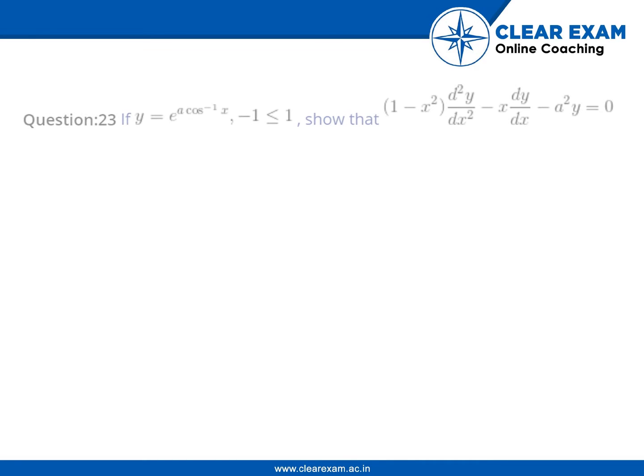Hello guys, let's understand question number 23. If y is equal to e to the power a cos inverse x, where x is greater than minus 1 and less than equal to 1, show that 1 minus x squared, d square y by dx square minus x into dy by dx minus a square y is equal to 0.